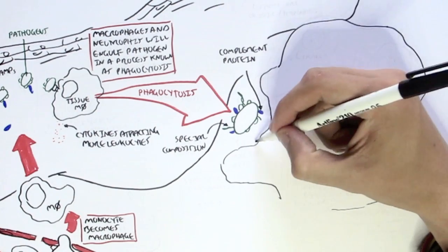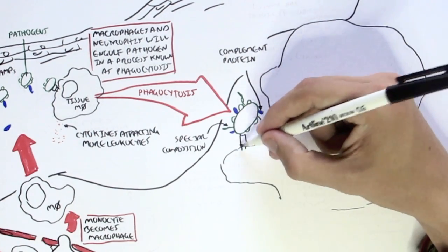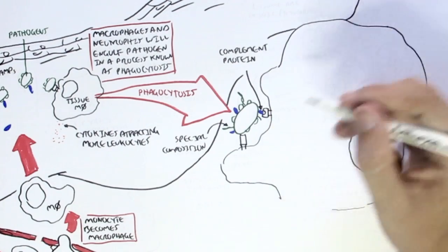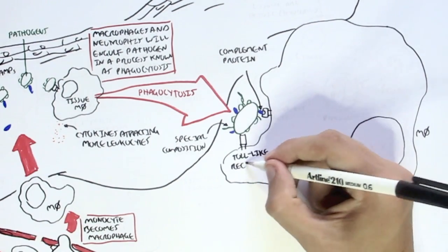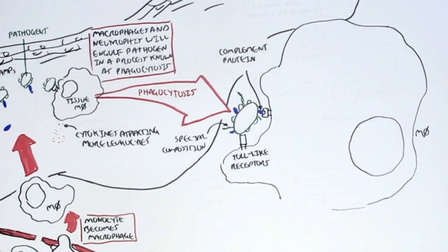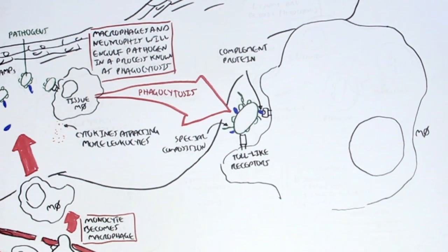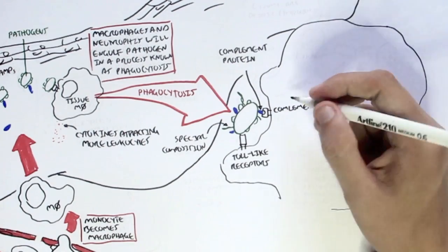And the macrophage can identify this pathogen either by receptors that recognize the PAMPs, such as a toll-like receptor, and it can also recognize the pathogen by the complement protein on it, with the complement receptor recognizing the complement protein on the pathogen.